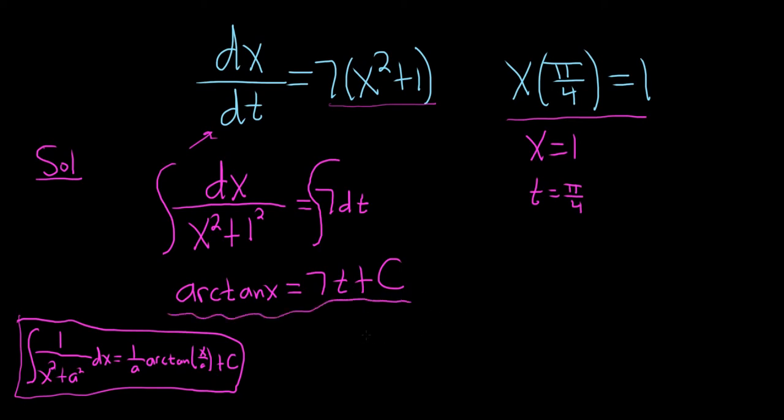If we plug in 1 for x, we have arctangent of 1. And if we plug in pi over 4 for t, we have 7 times pi over 4, so just 7 pi over 4 plus C.